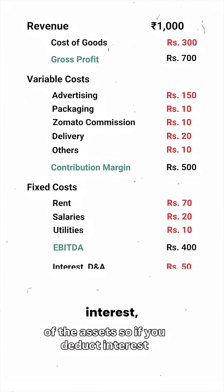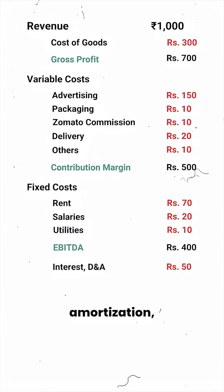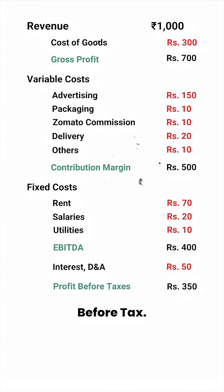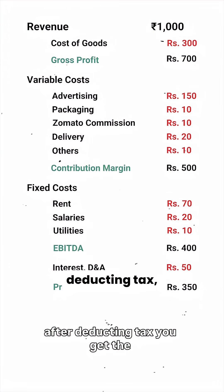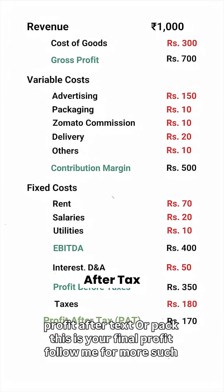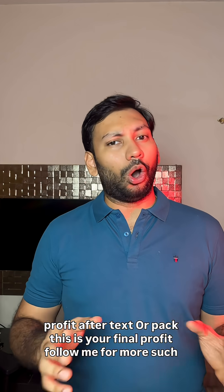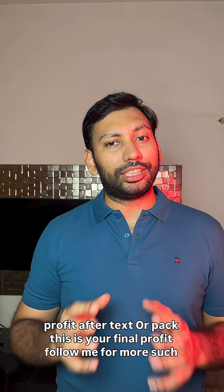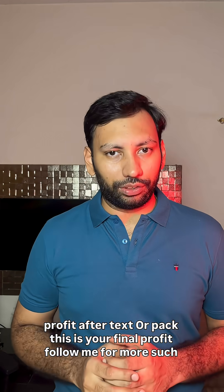So if you deduct interest, depreciation, and amortization, you get your profit before tax, and finally after deducting tax you get the Profit After Tax, or PAT. This is your final profit.